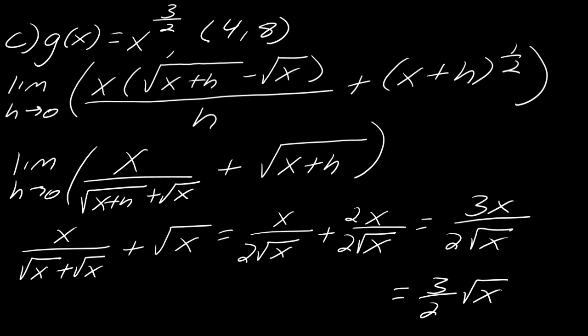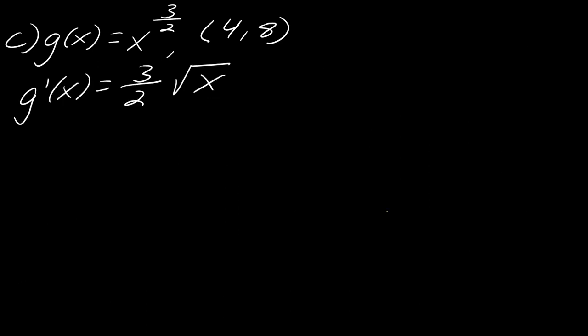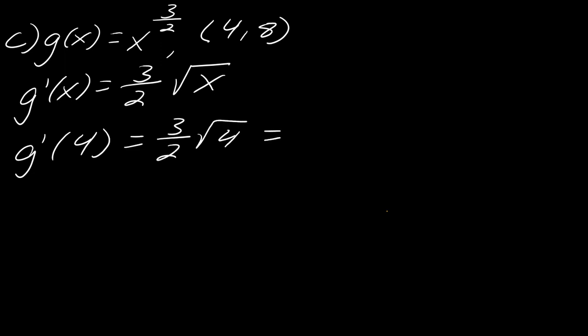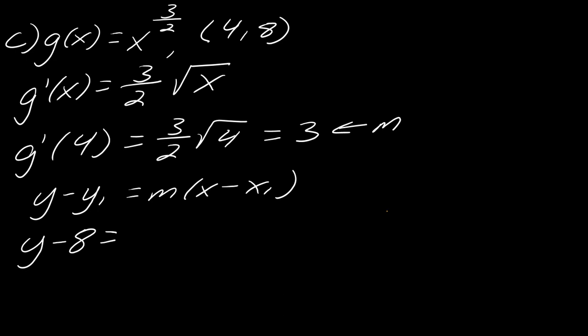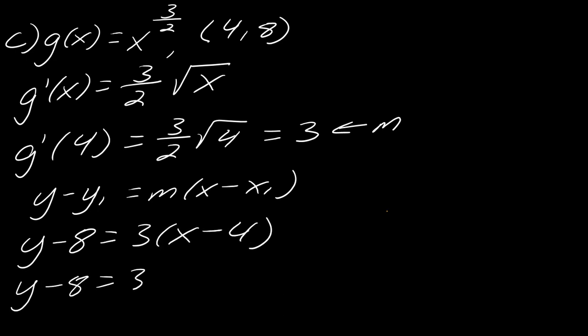So f'(x) = (3/2)·√x is the final derivative. Now we still need to find the tangent line. This is not the tangent line — it's how you find the slope. Plugging in x = 4 to find the slope: f'(4) = (3/2)·√4 = 3, so m = 3. Using point-slope form with slope 3 and point (4, 8): y minus 8 equals 3(x minus 4), giving y = 3x minus 12 plus 8, so the tangent line is y = 3x minus 4.